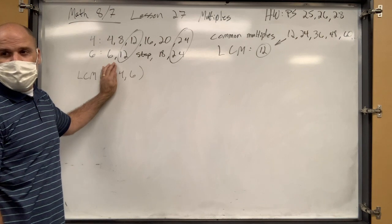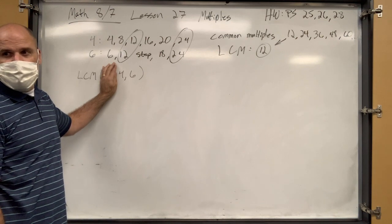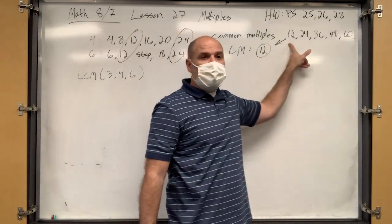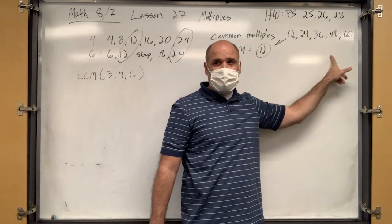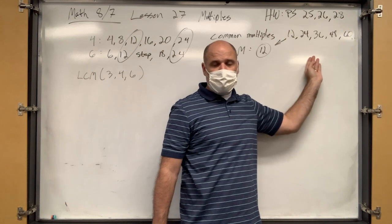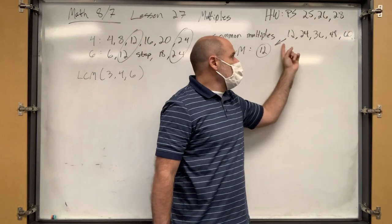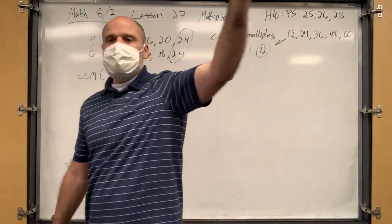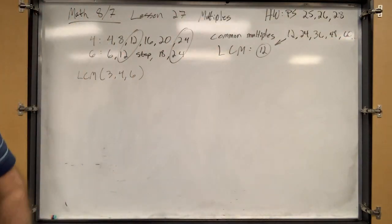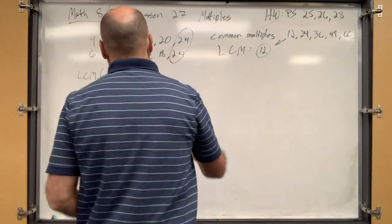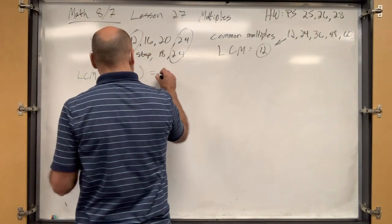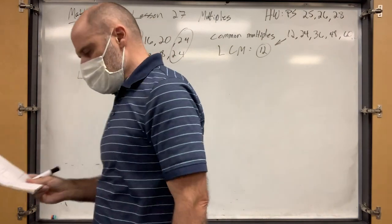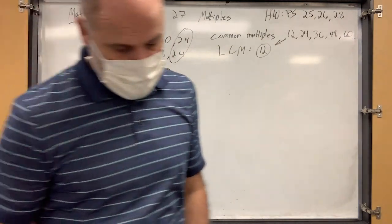What if it was 5, 4, and 6? That doesn't work because 5 doesn't go into 12, so you have to keep going. Looking at the list of common multiples of 4 and 6, anyone know the LCM of 5, 4, and 6? Hunter, I saw your hand first. 60. So 5 has to go into one of these numbers — the only number that 5 goes into is 60. The next one would be 120, then 180.